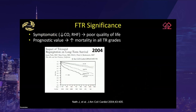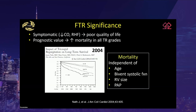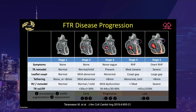Functional tricuspid regurgitation is clinically important because patients are symptomatic with poor quality of life from decreased cardiac output and right heart failure. The presence of FTR, regardless of severity, reduces survival with increased mortality independent of age, biventricular systolic function, right ventricular size, and pulmonary artery pressure. FTR can progress over time in stages — though these are not linear — with patients being heterogeneous in their degree of leaflet tethering, annular dilatation, and right heart remodeling.